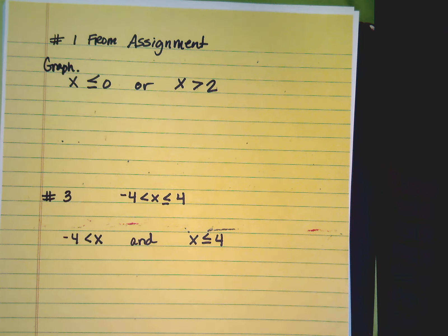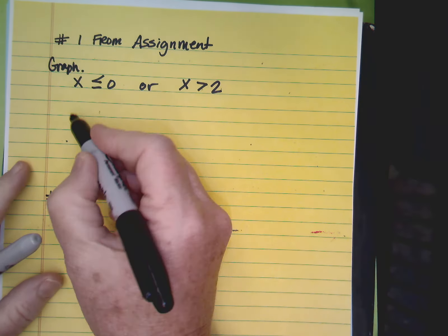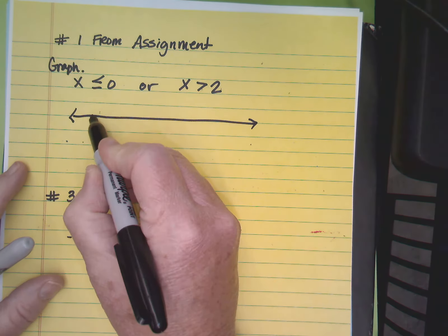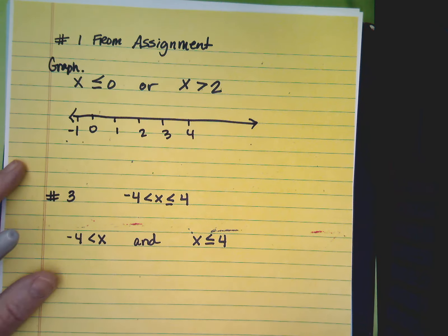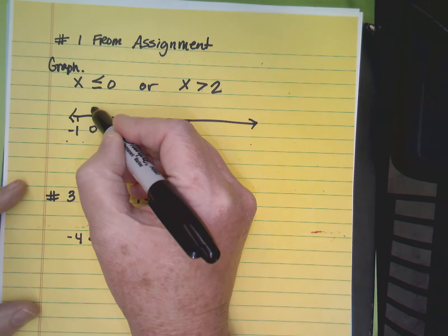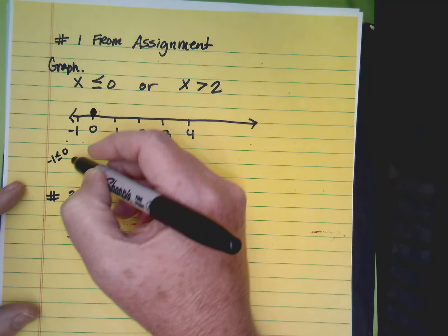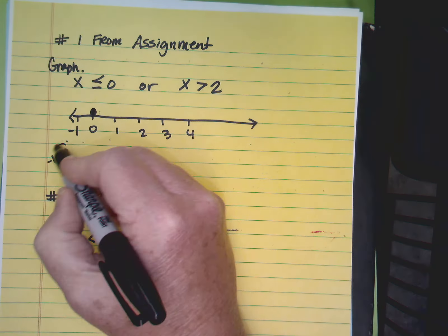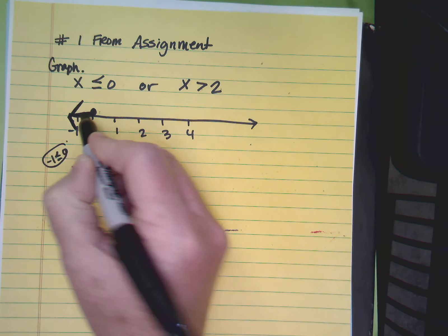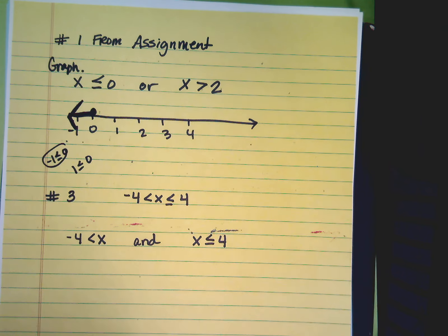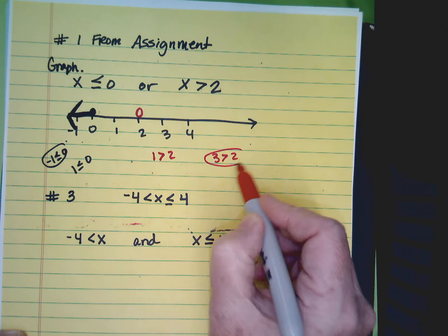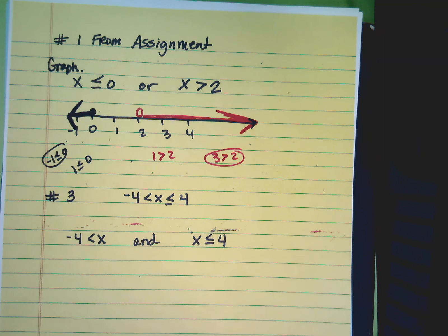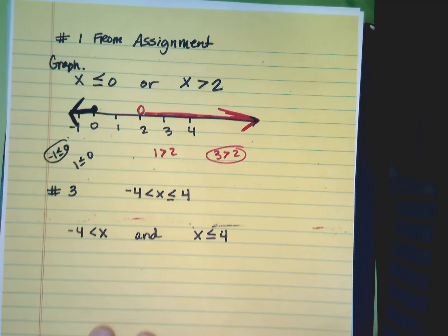I'm going to do a couple of problems from your assignment. All you're asked to do today is to graph these inequalities. We're just getting used to graphing and seeing things on the number lines. So the first one is an or problem. We're going to test if negative 1 less than 0 or is 1 less than 0. So this is your answer. This is what I'm looking for.